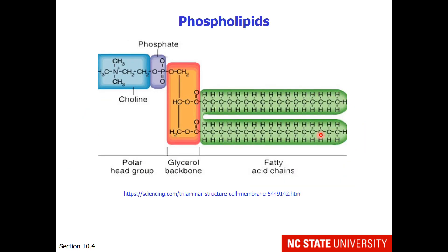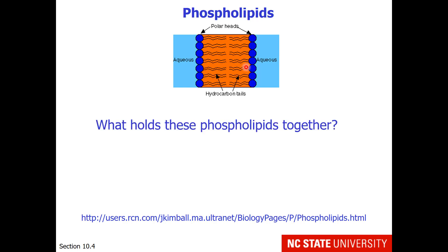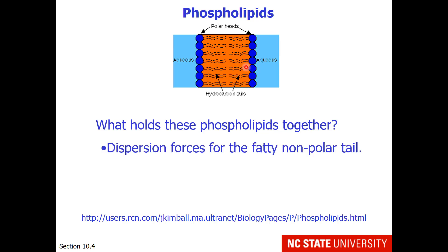This brings up another idea about how you personally are constructed. Those of you who are interested in biology recognize that the cell is composed of phospholipids. These are materials that have a very long hydrocarbon tail — so that's nonpolar — and then some ionic character in the phosphate and the amine functionality, which are polar. So how do phospholipids organize themselves in water? They put the polar heads toward the water and the hydrocarbon tails toward the inside. What holds these phospholipids together? We have dispersion forces for the fatty nonpolar tail, and hydrogen bonding for the polar head.